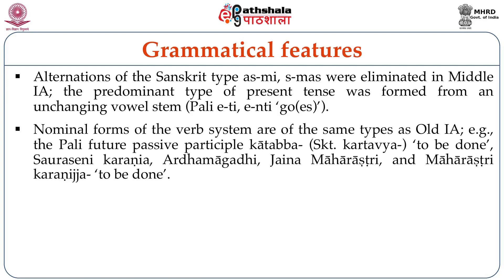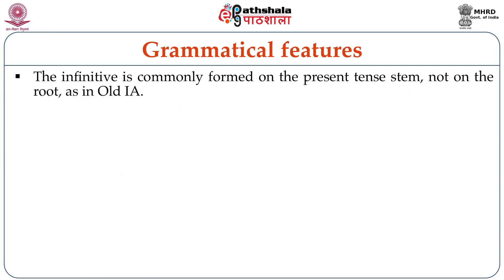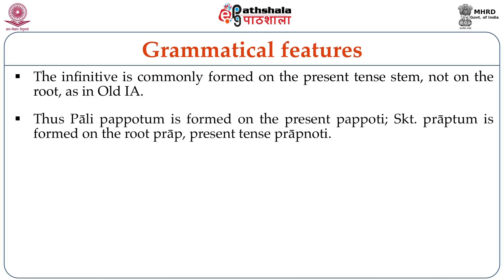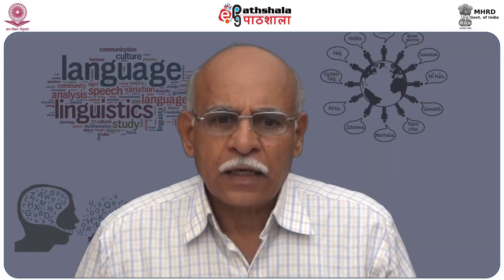Normal forms of the verb system are of the same type as Old Indo-Aryan. For example, the Pali future passive participle katabba — Sanskrit formation kartavya (to be done) — corresponds to Sauraseni karaniya, Ardhamagadi karaniya, Jain Maharashtri and Maharashtri karaniya (to be done). The infinitive is commonly formed on the present tense stem, not on the root as in Old Indo-Aryan. Thus Pali papothum is formed on the present papothi, whereas Sanskrit praptum is formed on the root with present tense prapnoti.